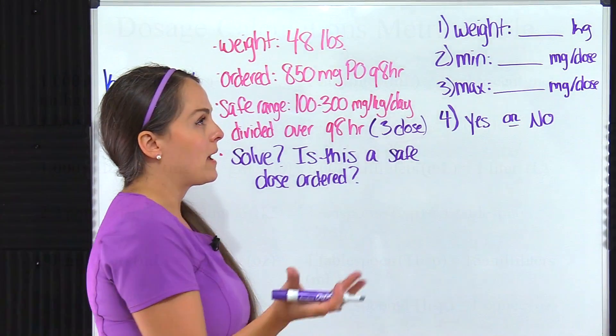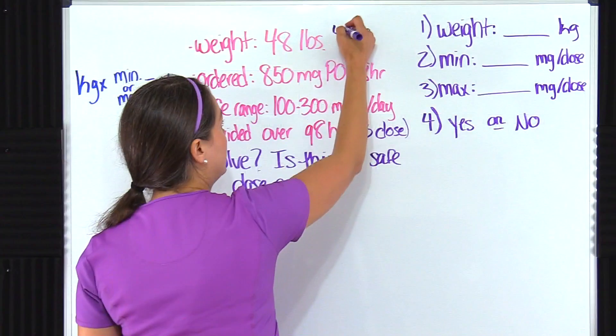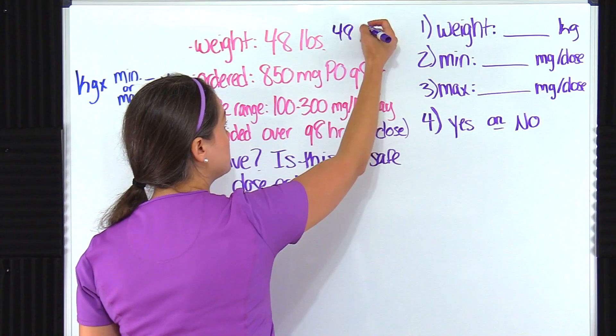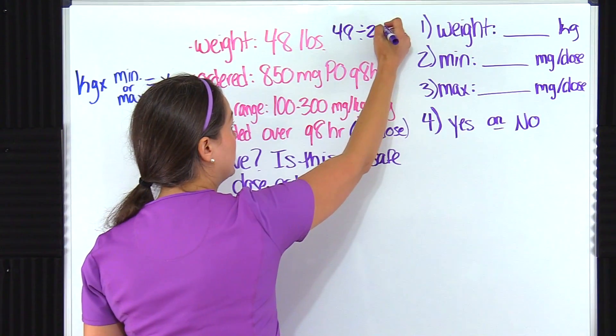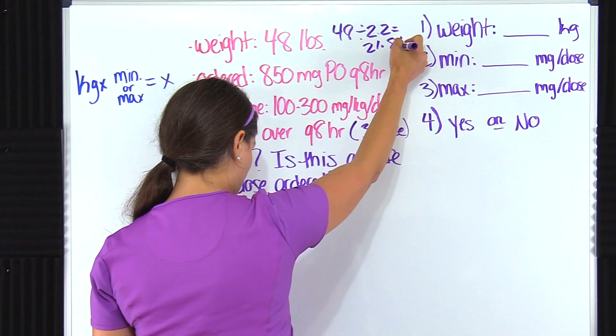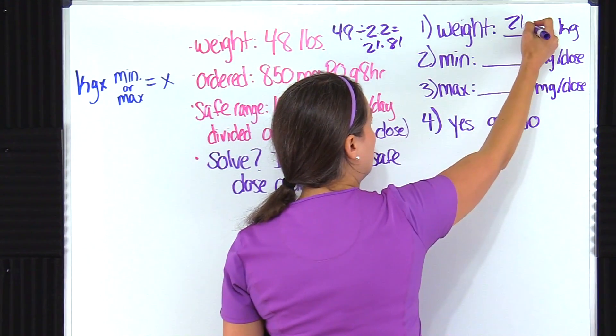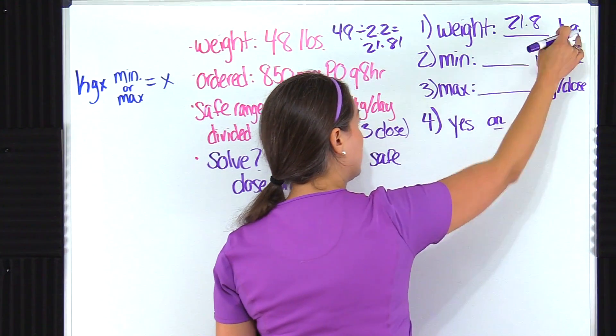So to do that, let's think back to the metric table. We know that 2.2 pounds equals one kilogram. So what we're going to do is we're going to take 48, their weight in pounds, and we're going to divide that by 2.2. That gives us 21.81. And we're going to round to the nearest tenth to 21.8. That is their weight in kilograms.